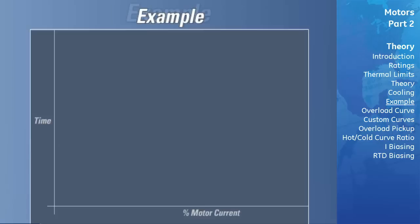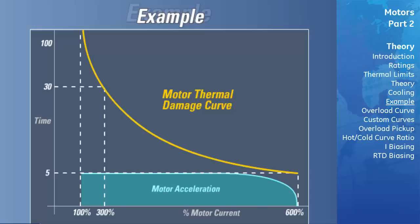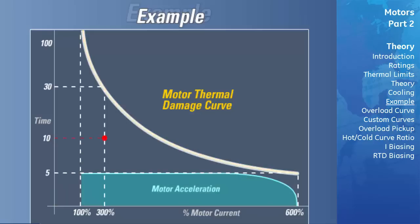Now let's see how the thermal model works with a hypothetical situation. For a given motor, the thermal damage and acceleration curves are shown. The acceleration curve barely fits under the stall limits portion of the thermal limits curve. The protection relay tripped 10 seconds into the start. The customer notes that during the start, the motor drew 600% rated current for 4 seconds, then the current dropped to 300% for only 6 seconds before the relay tripped. Given that the thermal damage curve was selected correctly, the customer wants to know why the relay tripped, even though the current did not exceed the thermal damage curve limits.